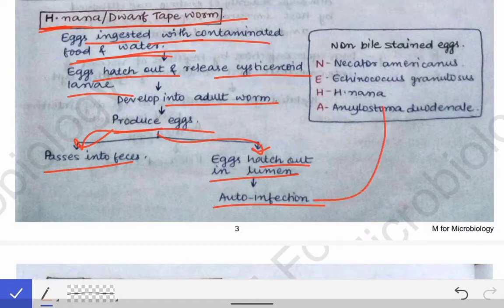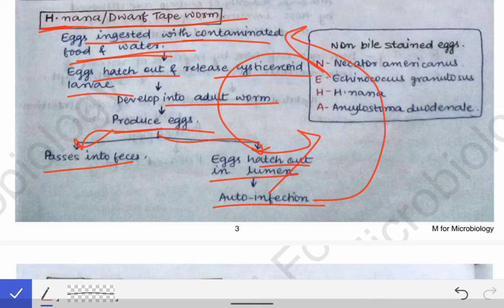Because this auto-infection cycle continues, Hymenolepis nana does not require any intermediate host. The cycle continues within the same host, which is infected again and again by auto-infection.